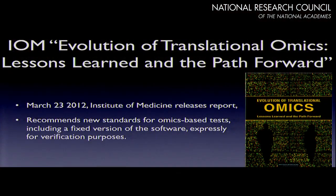I should mention this NAS report from 2003 — more than 10 years old — called 'Sharing Publication-Related Data and Materials.' The first principle says authors should include in their publications the data, algorithms, and other information that's central or integral to the publication — whatever is necessary to support the major claims of the paper and would enable one skilled in the art to verify or replicate the claims. This isn't a new issue being forced upon us. Embedded in those terms 'algorithms' and 'data' are notions not just of empirical reproducibility but also computational and statistical reproducibility with their different attendant standards.